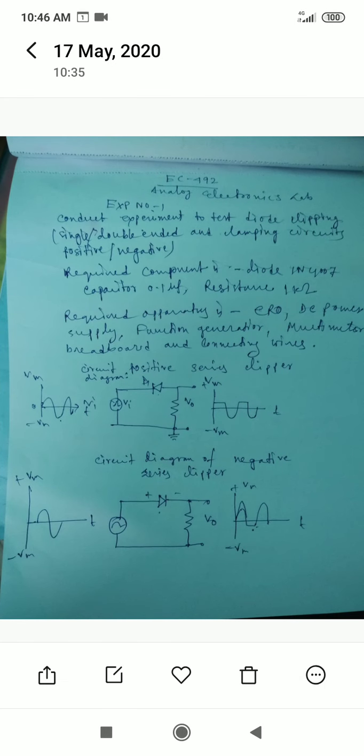This is the Circuit Diagram of Positive Series Clipper. At first, what is Positive Series Clipper? A Clipper which removes portion of positive half cycle of the input signal is called Positive Clipper.